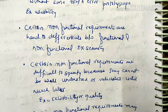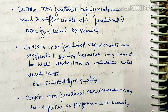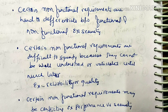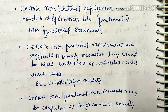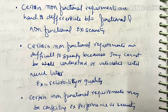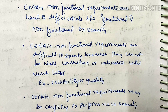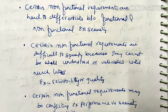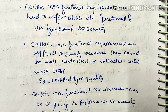Certain non-functional requirements are difficult to specify because they cannot be well understood or validated until much later. Some non-functional requirements are difficult to specify because we cannot easily understand them upfront. Their quality and reliability can only be known after some time, so it becomes difficult to specify them early.